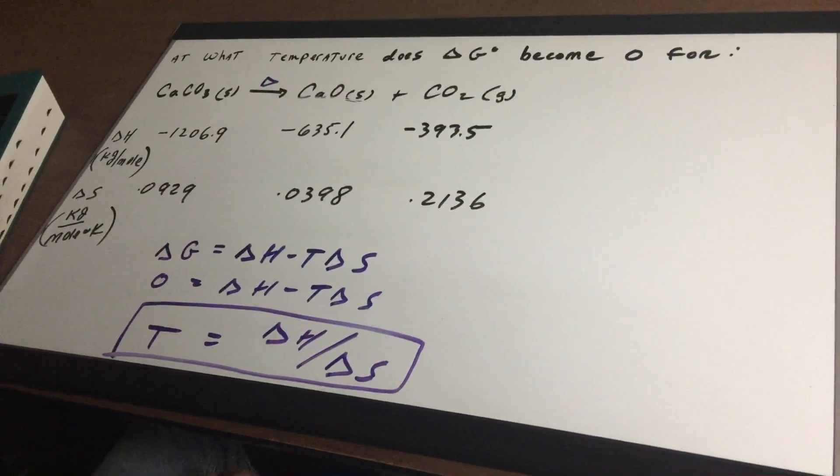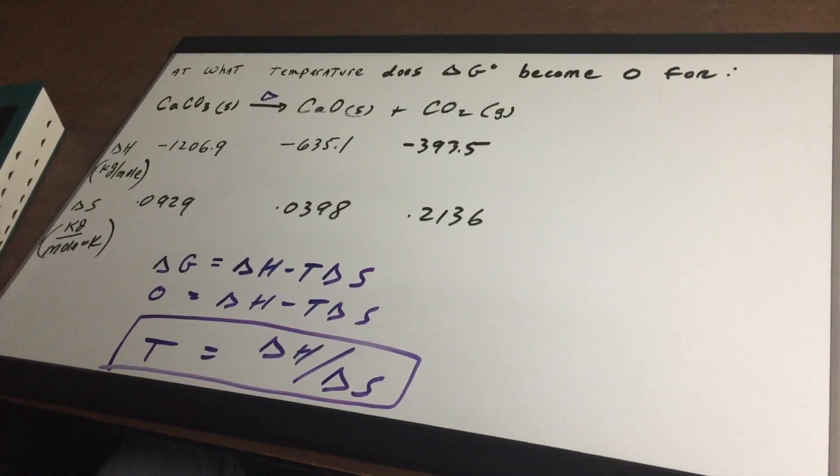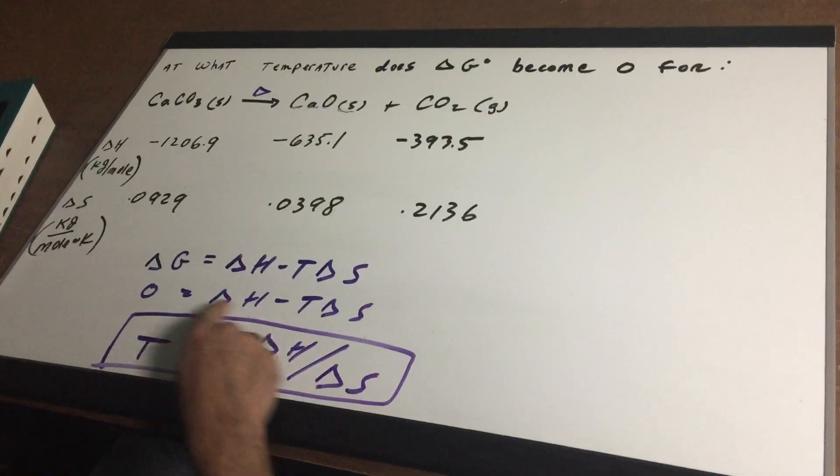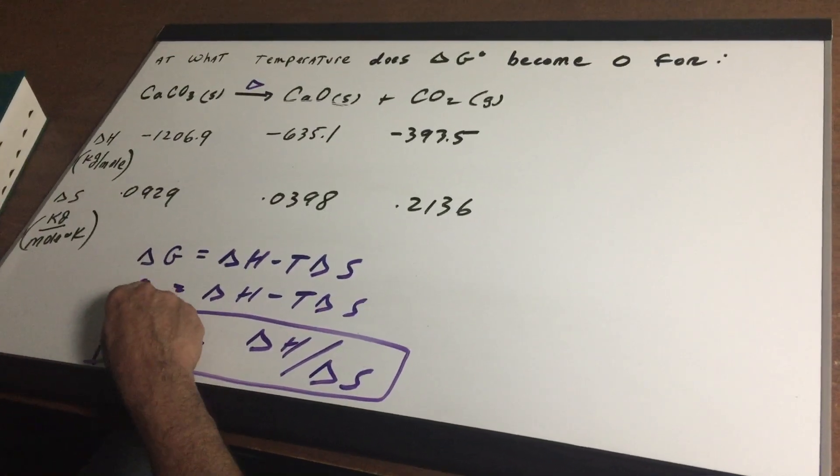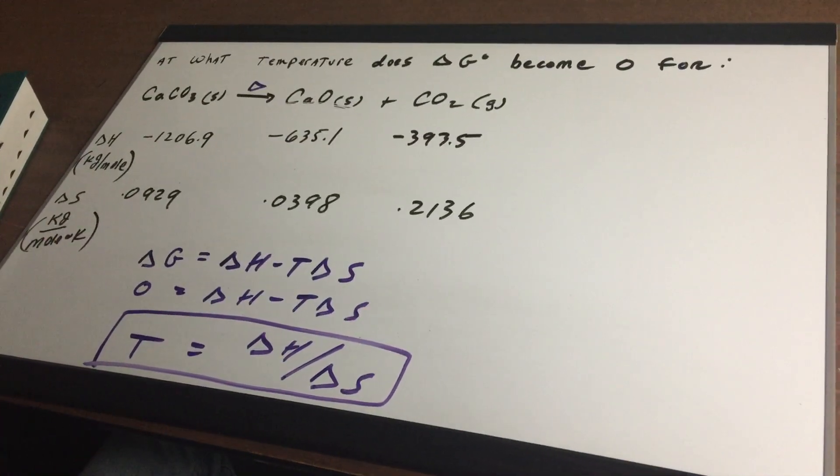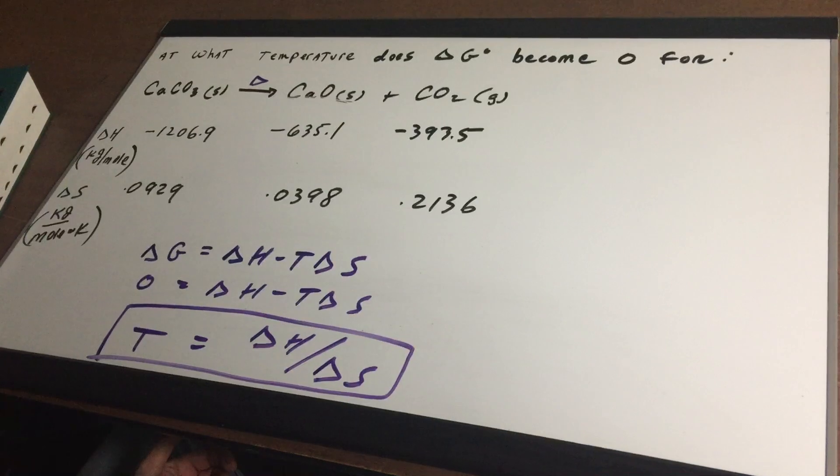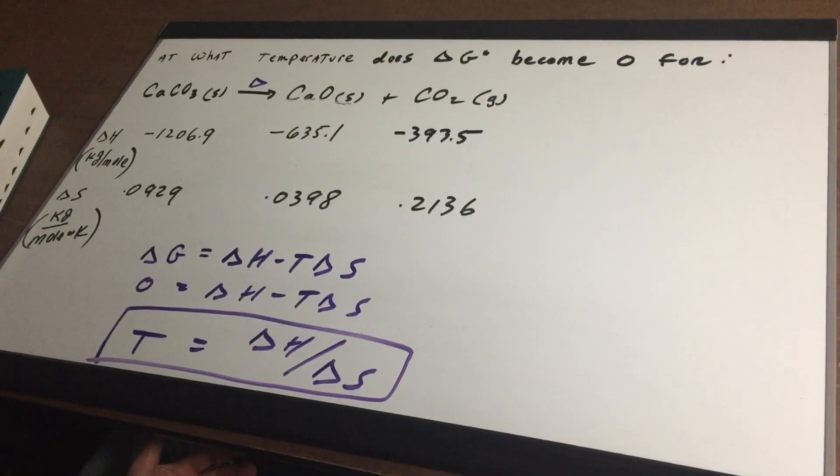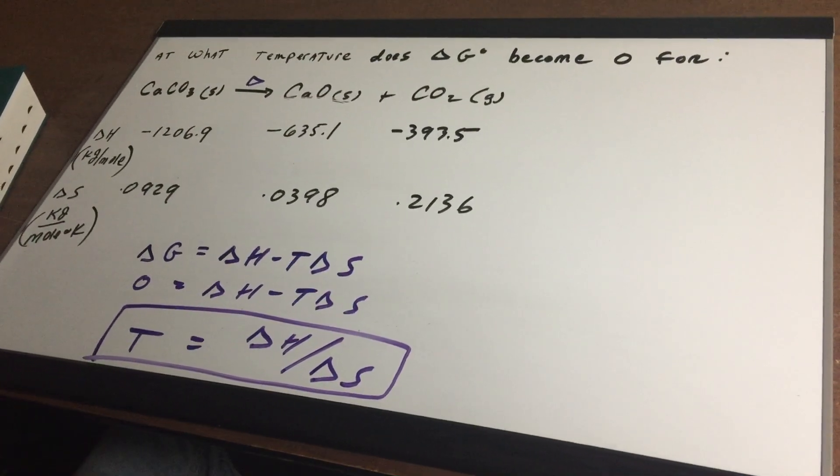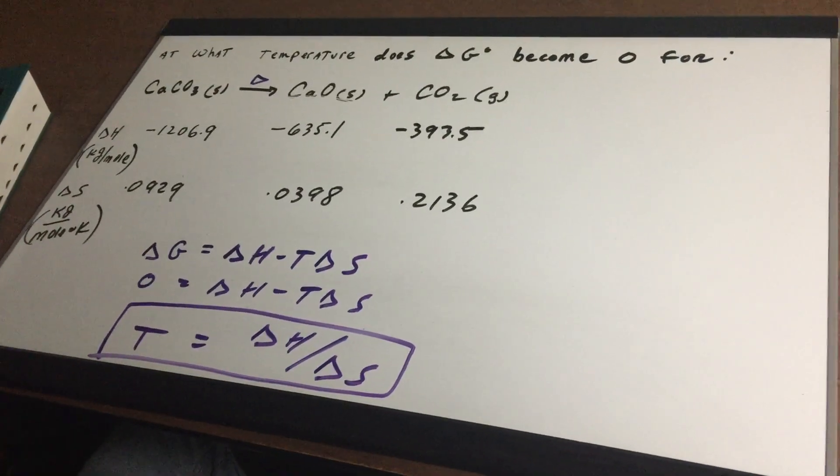So the first thing that you would simply do is to write the formula Delta G equals Delta H minus T Delta S. And you want to set Delta G equal to zero because that's the equilibrium position. Now, remember, Delta G is equal to zero at any equilibrium point, whether it's a boiling point or a freezing point or a melting point, a sublimation point, Delta G is zero.